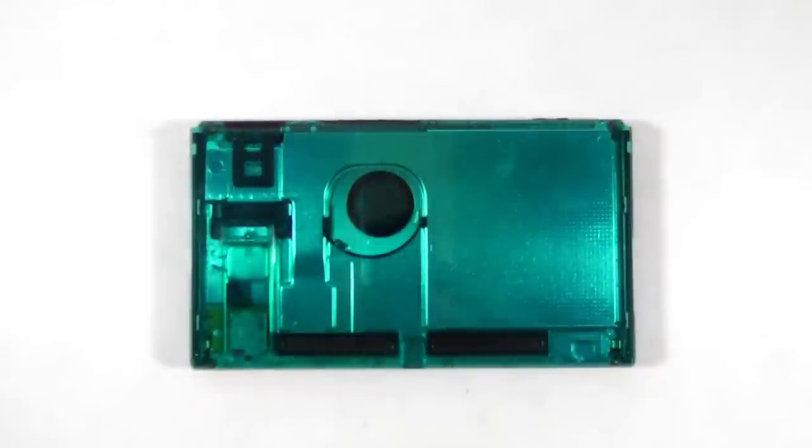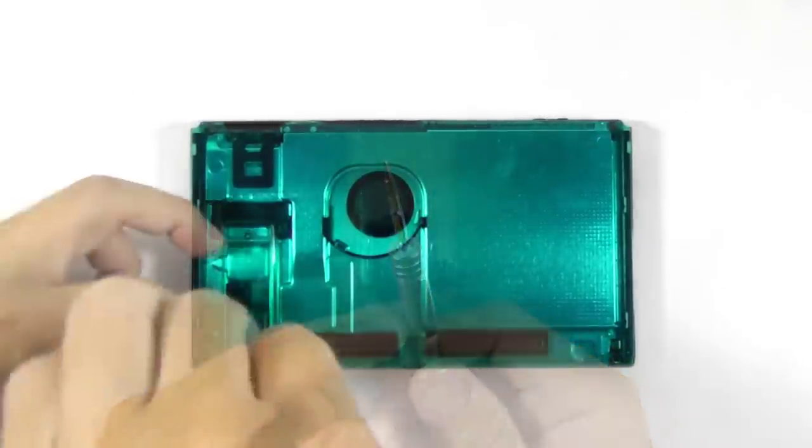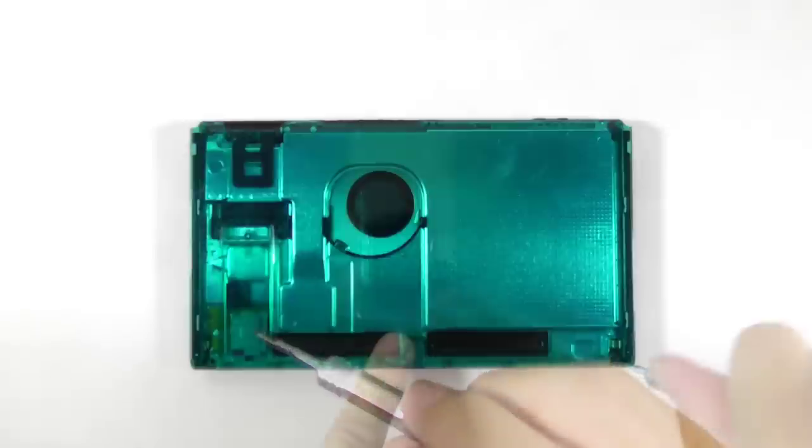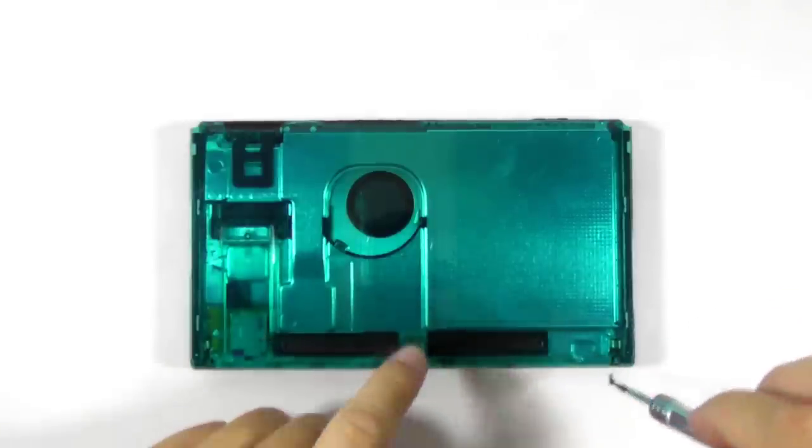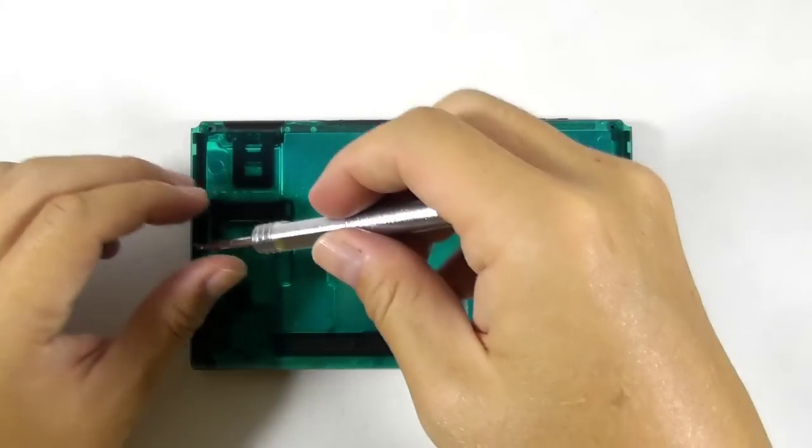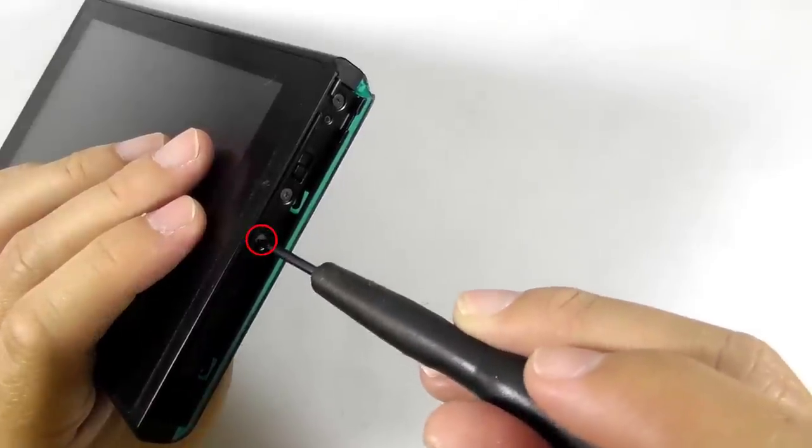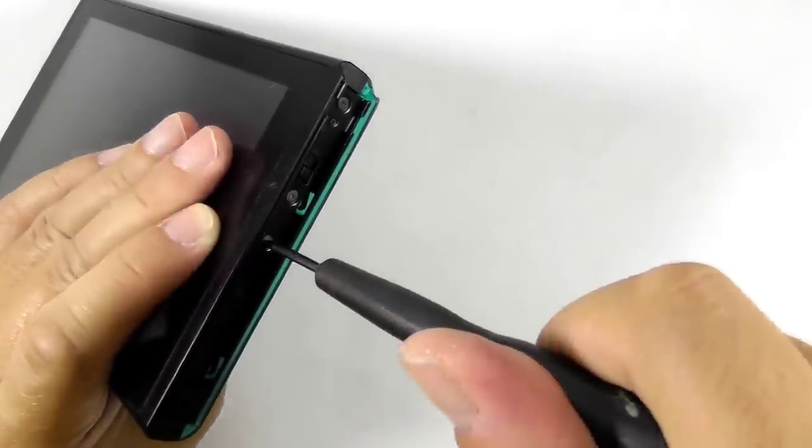Get your tri-wing screwdriver and remove these four screws. Then use a Phillips screwdriver to remove the middle screw on the right Joy-Con rail.